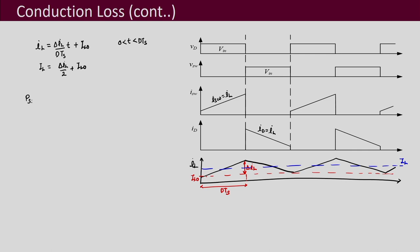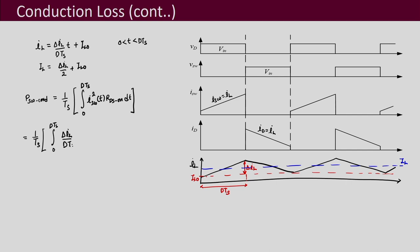Further, if we write the switch conduction loss and try to solve it, we integrate over 0 to DTs, substituting the expression for I_SW.